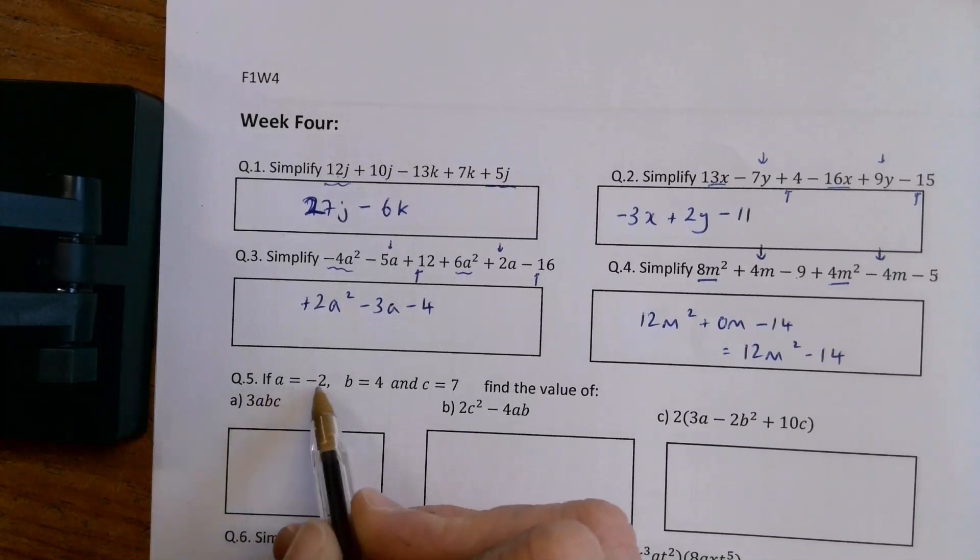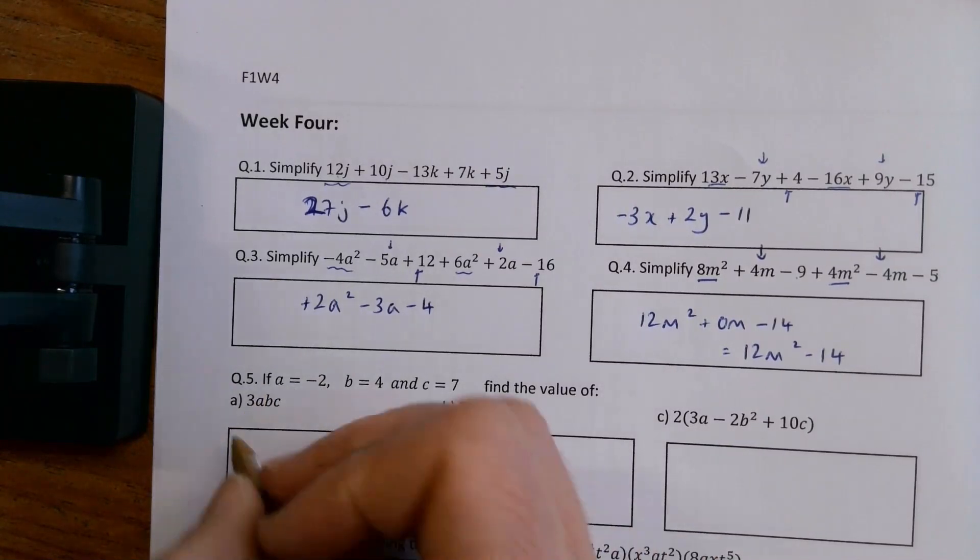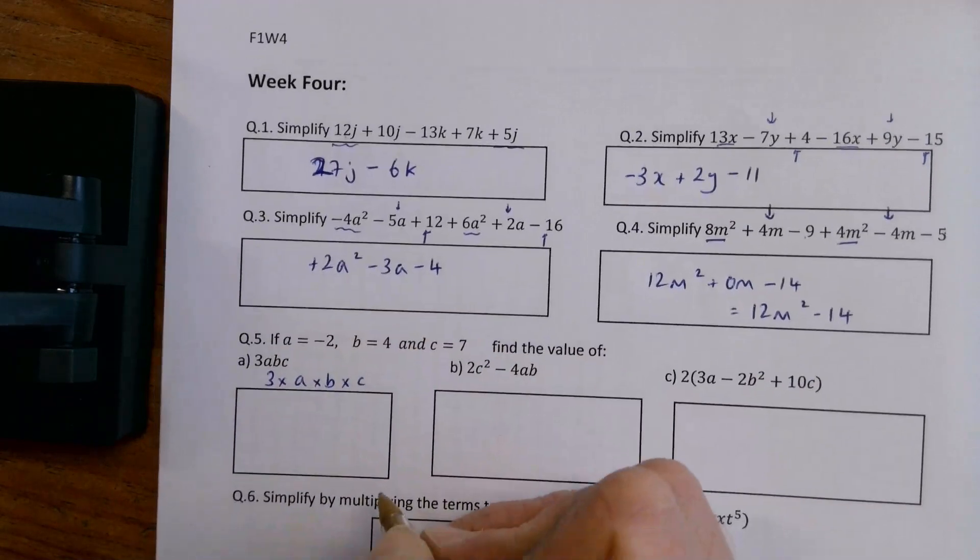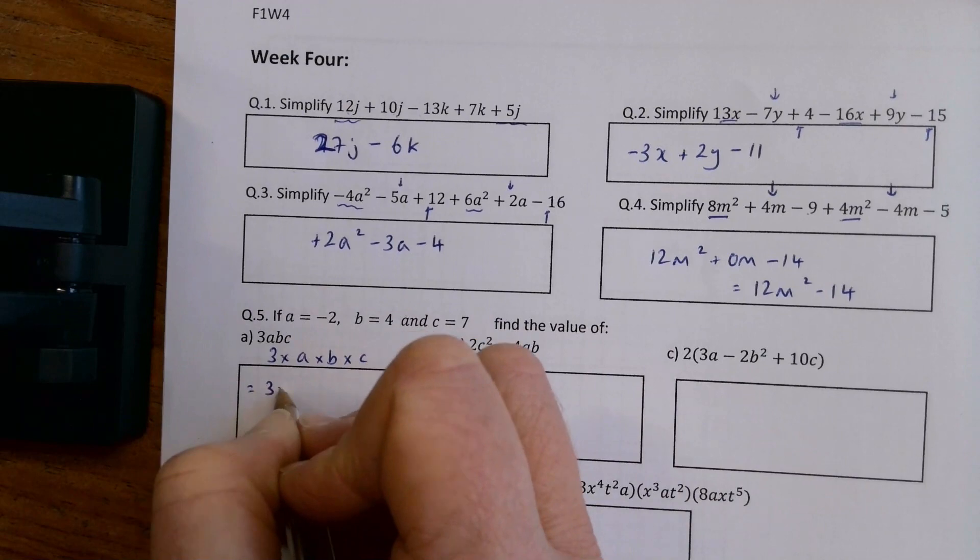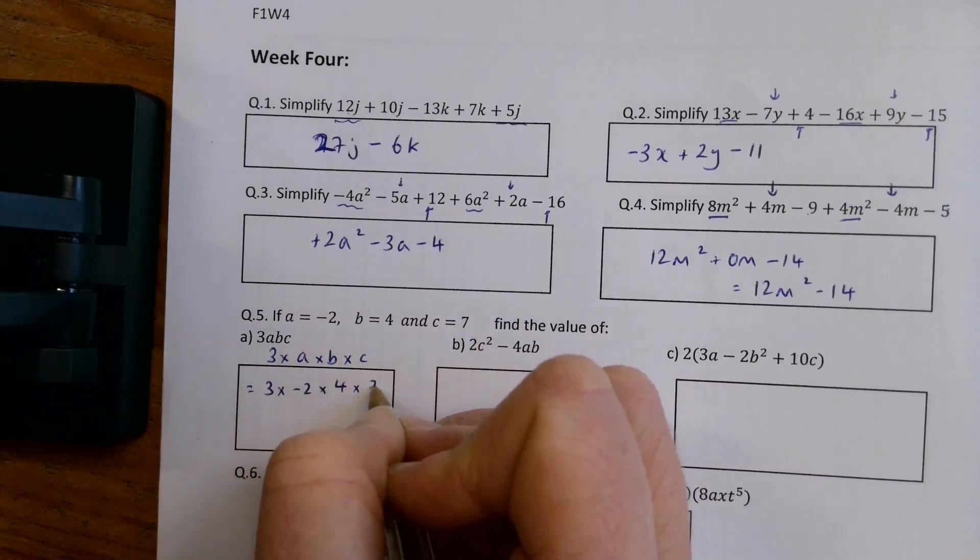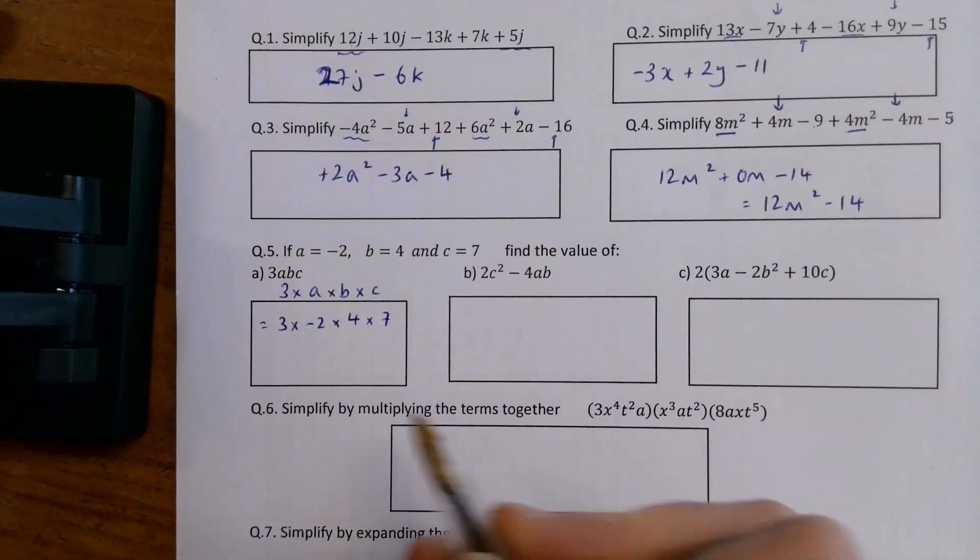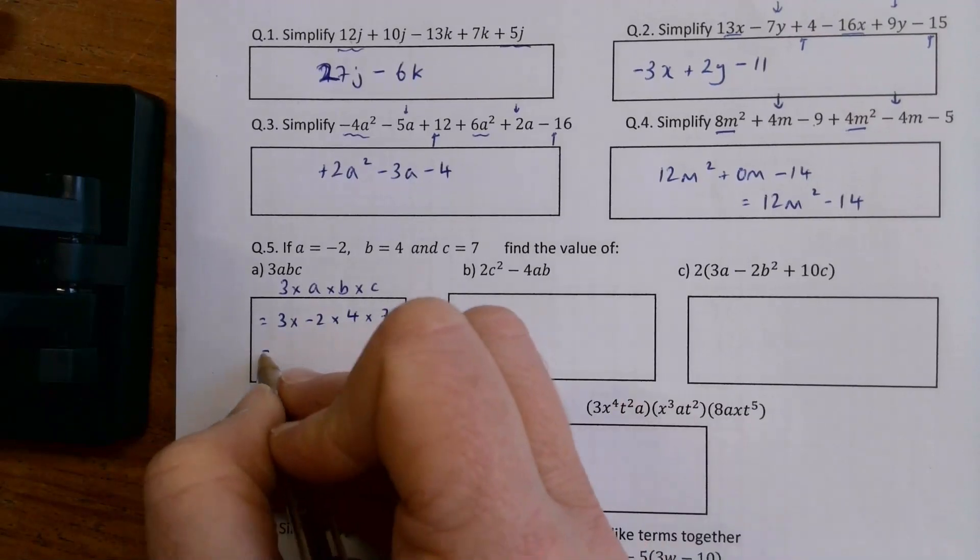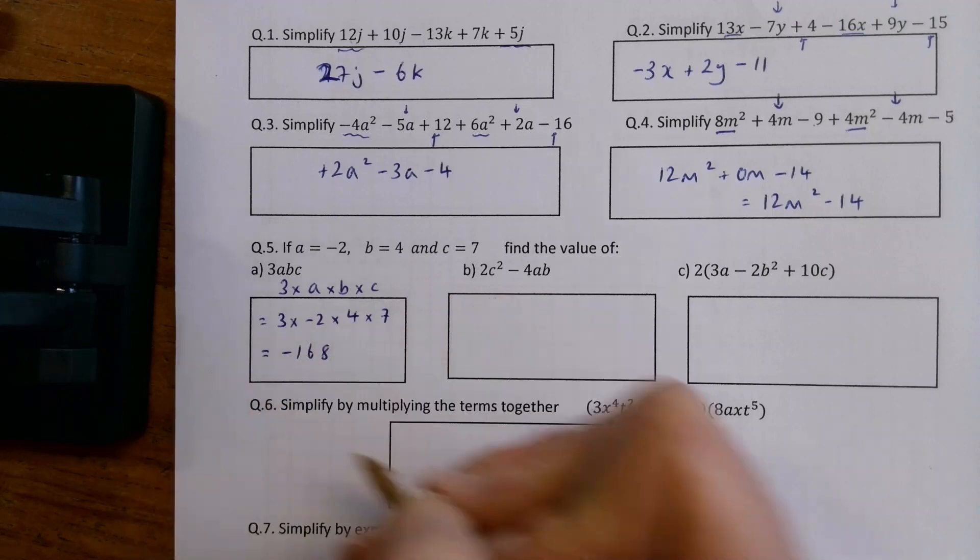If A equals minus 2, B equals 4, and C equals 7, find the value of 3ABC. So 3ABC means 3 times A times B times C. So that's going to be 3 times minus 2 times 4 times 7. So that's minus 6 times 4 is minus 24 times 7 is minus 168, I think. You can check in your calculator.